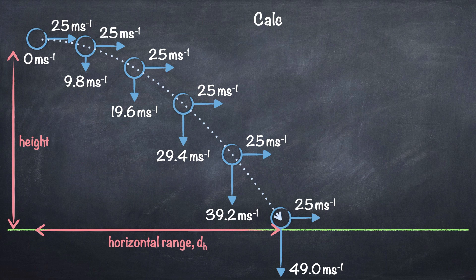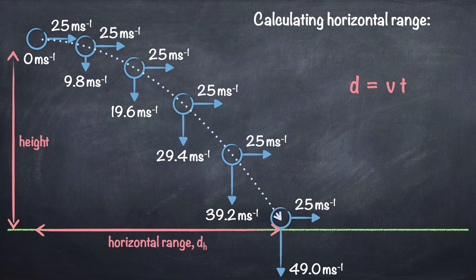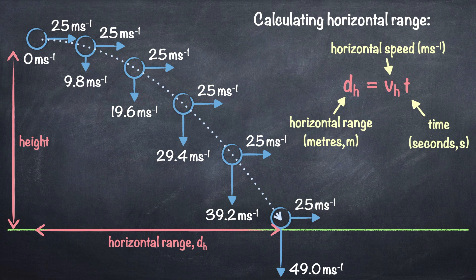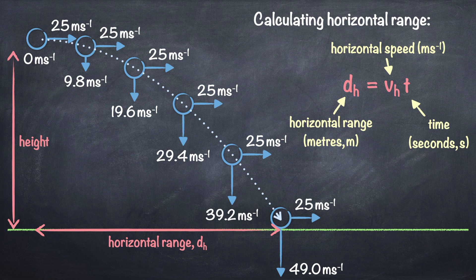To calculate the projectile's horizontal range, we can use the equation from the relationship sheet: distance equals speed times time. It's important to remember that to calculate the horizontal distance, or range, we need to multiply the horizontal speed by the time it takes the projectile to travel from its starting position to where it hits the ground — in our example, 25 m/s multiplied by 5 seconds. In some questions we're given the horizontal range and the time, and asked to calculate the horizontal speed, so we rearrange the equation accordingly.